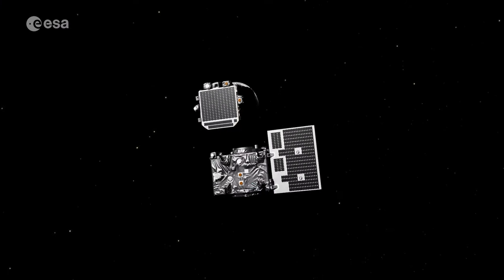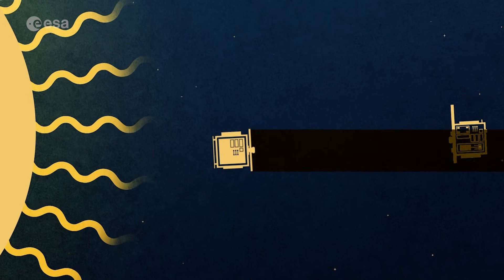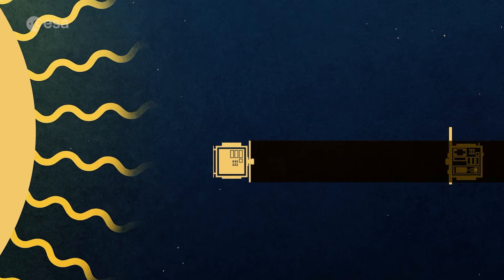Two small satellites flew in perfect formation, aligning precisely with the Sun. One satellite blocked the Sun's light, casting a shadow onto the other.